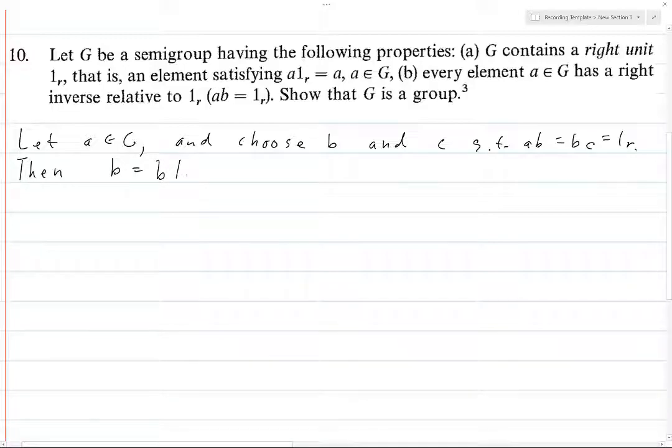So b equals b·1_r, but 1_r is ab, so this is bab. So 1_r, which is bc, we replace b with babc. We'll replace b with bab and then you have the c still there. But now this bc is 1_r, and so we have ba·1_r, and so 1_r is the right unit, so this is just ba.